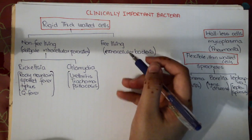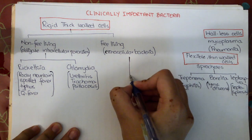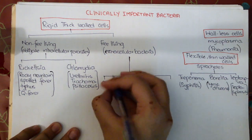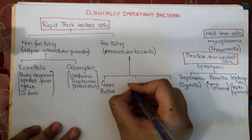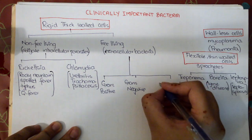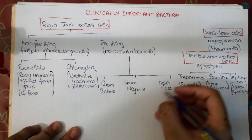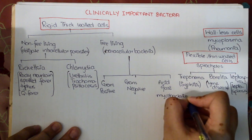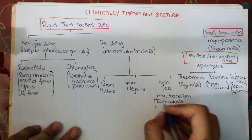Now coming to the free-living extracellular bacteria, these can be divided into gram positive, gram negative, and acid fast. The acid-fast bacteria are the mycobacteria, and they cause tuberculosis and leprosy.